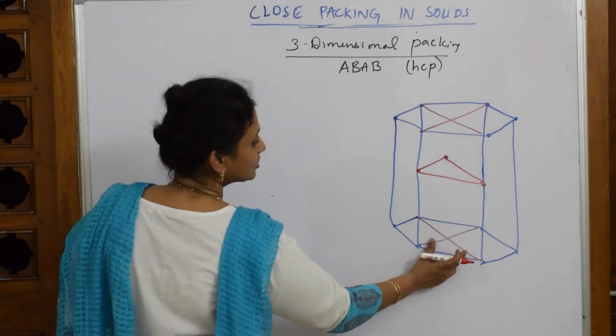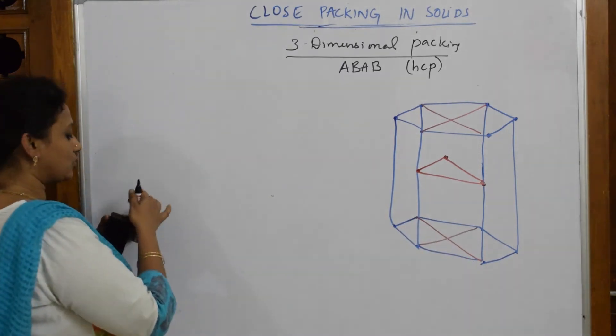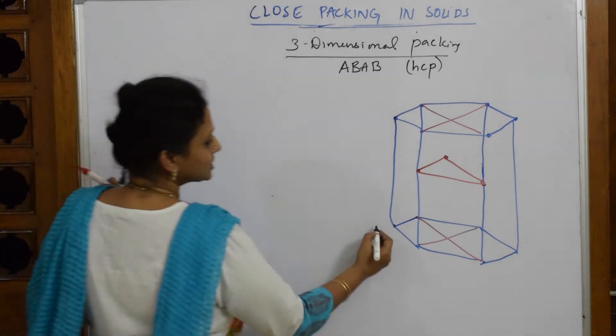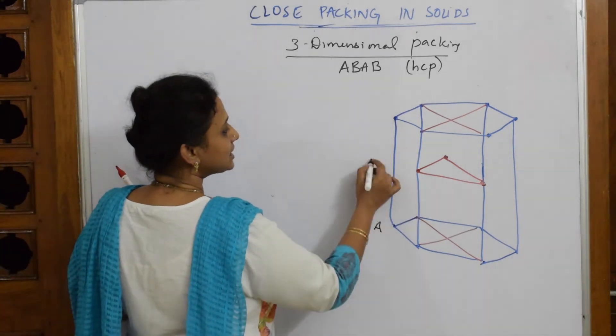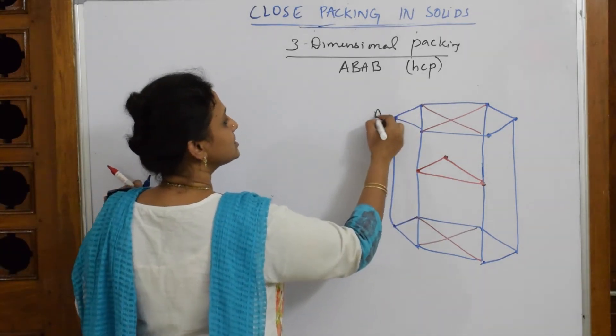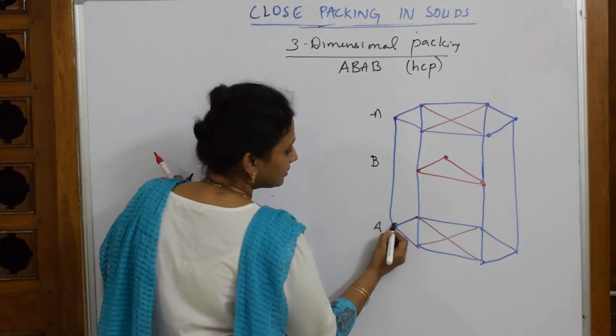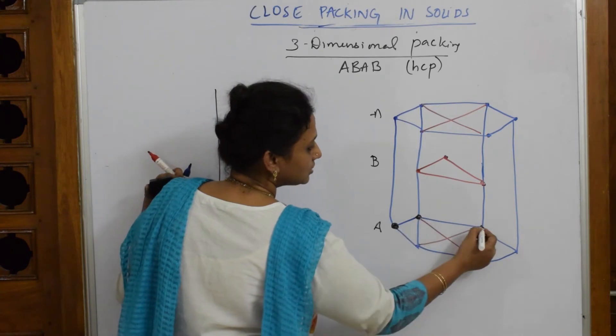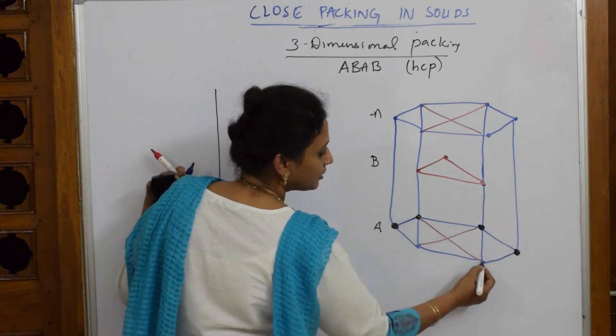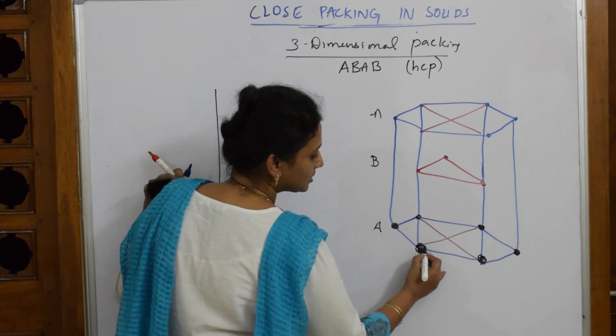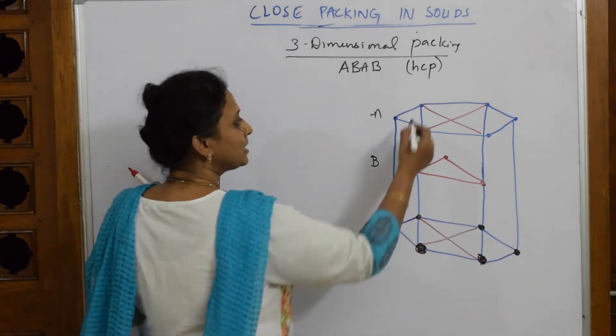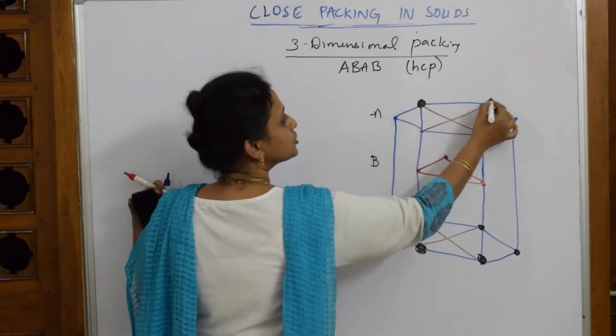Now I have to show this back. When I draw it in the form of packing, this layer is A, this layer is B, and again this layer is A. How many atoms do I have? One, two, three, four, five, and six. This is hexagonal packing. Here also: one, two, three, four, five, and six.